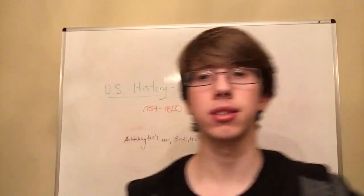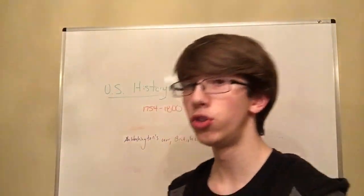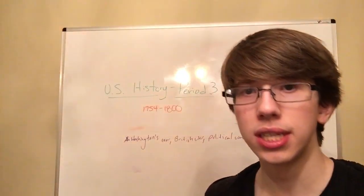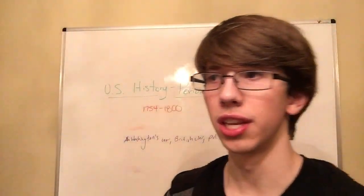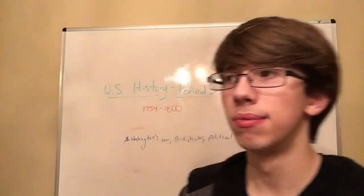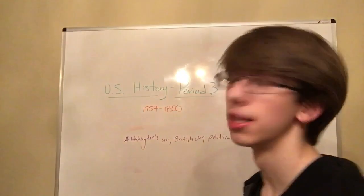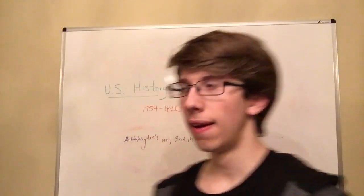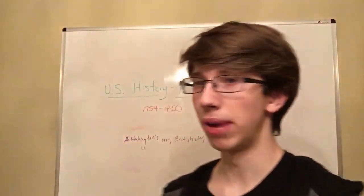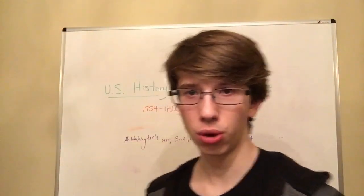Now let's talk about American governance during this time period. The first form of American government was the Articles of Confederation, which was a huge failure. It gave more power to states than the federal government, each state created its own currency values, and federal debt increased dramatically. The Shays' Rebellion demonstrated this failure — no one was able to stop the insurrection from occurring.